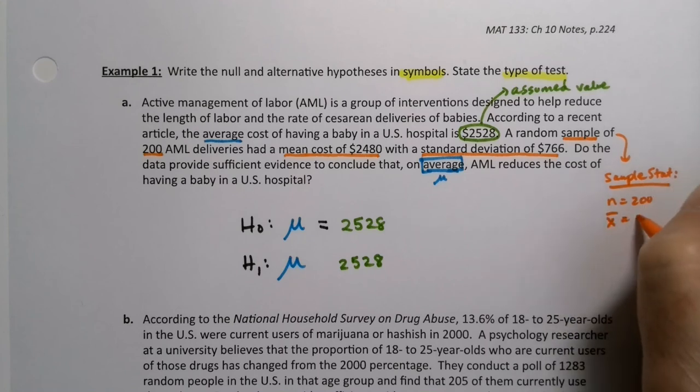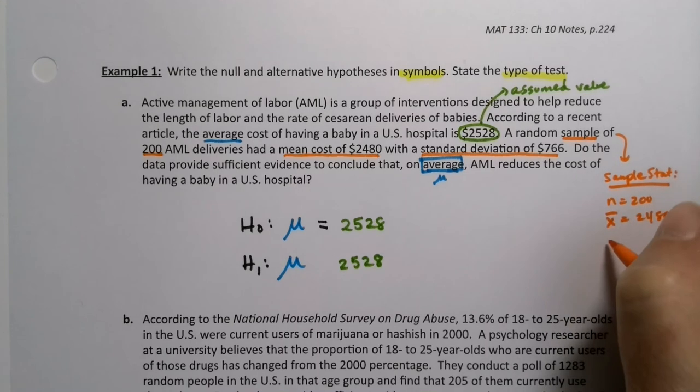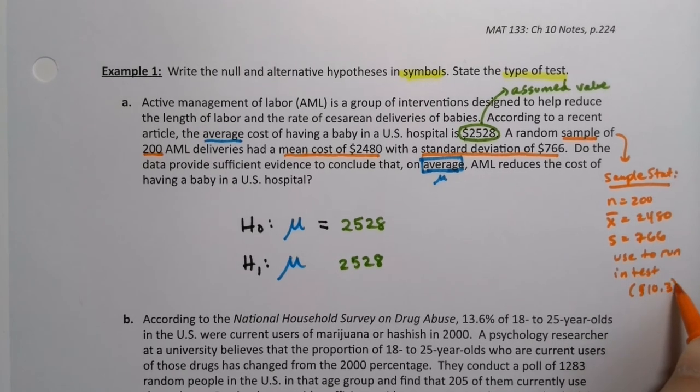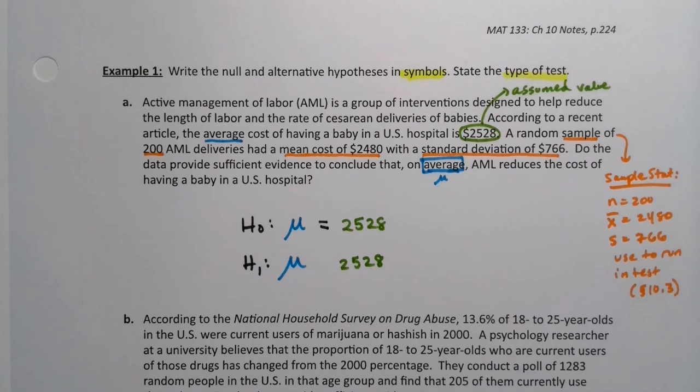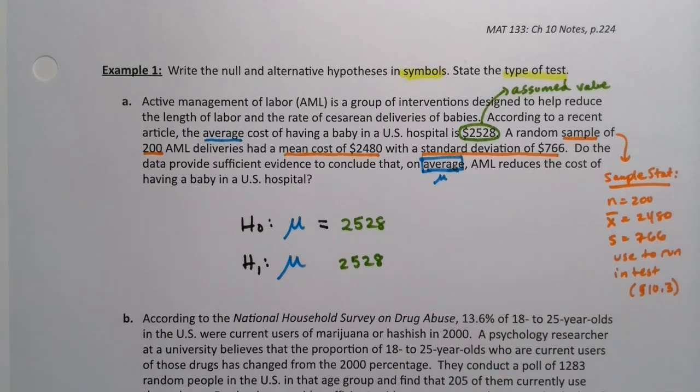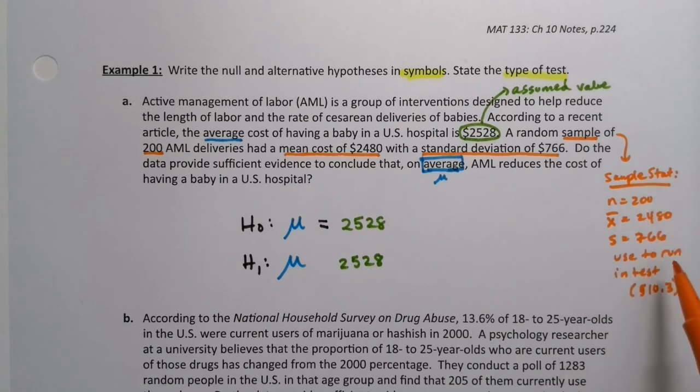All of that stuff is sample statistics, which remember we use to test the parameter that we assume. So you know N is 200. You know X bar, the sample mean was 2480. And S is 766, S being the sample standard deviation. Those values are used to run the test, which we're not doing in this section. We would do that in section 10.3 because it's a mean one. And the mean ones are 10.3. So they're there to throw you off the trail. Well, I shouldn't say that. They're there to actually run the test. You actually desperately need those values, but you don't need them for this particular example because this particular example is all about developing the hypotheses.